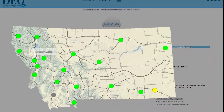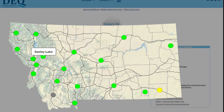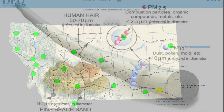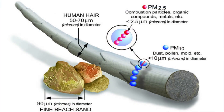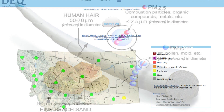Each of the dots on the main Today's Air page represents a station where inhalable fine particulate matter is measured. Fine particulate matter is the primary air pollutant of concern in Montana. Inhalable fine particulate matter consists of suspended airborne particles that are less than or equal to 2.5 microns in diameter, and is commonly referred to as PM 2.5.